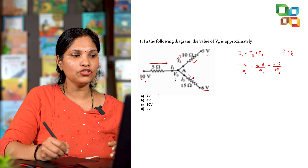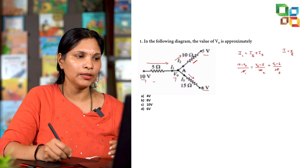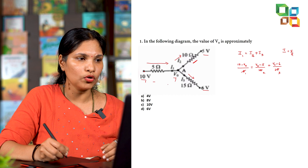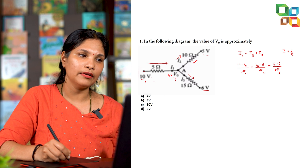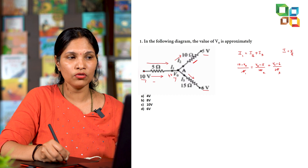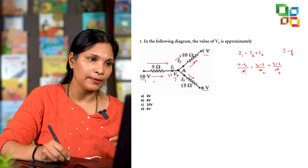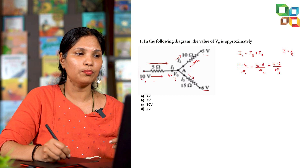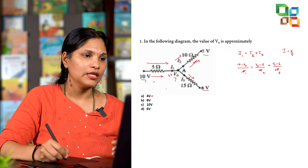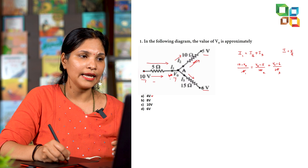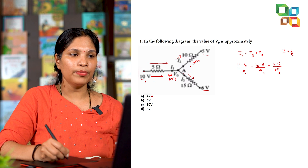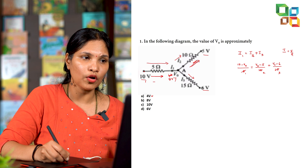We can check the options and try to eliminate certain ones. Starting with 4 volts: current I1 could flow from 10 V to 4 V, but I2 would have to go from 4 V to 5 V, which is not possible since current flows from lower to higher potential — so 4 volts is discarded. For 8 volts: I1 flows from 10 V to 8 V, I2 from 8 V to 5 V, and I3 from 8 V to 6 V — all possible.